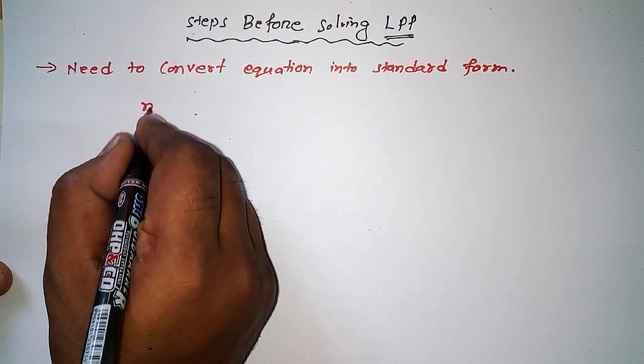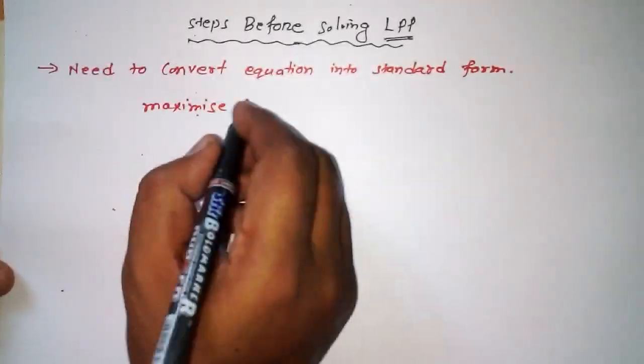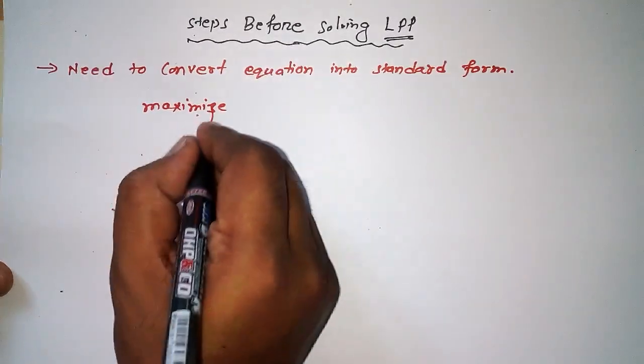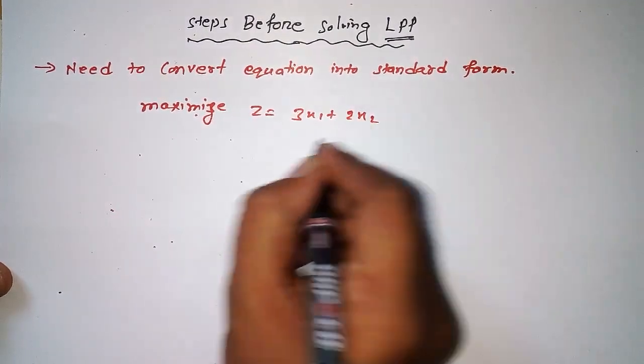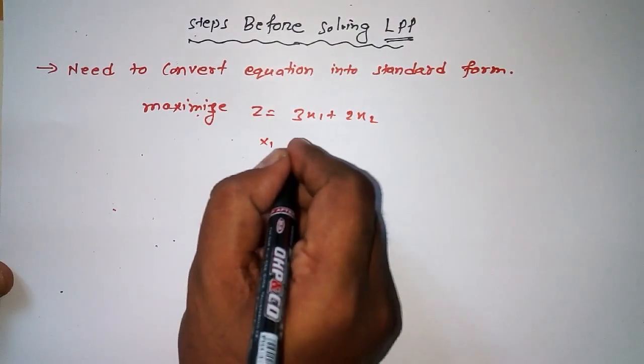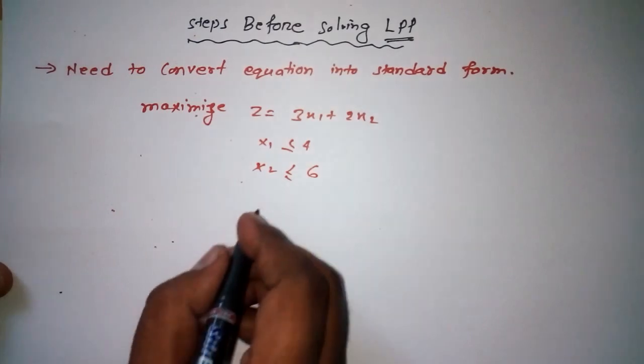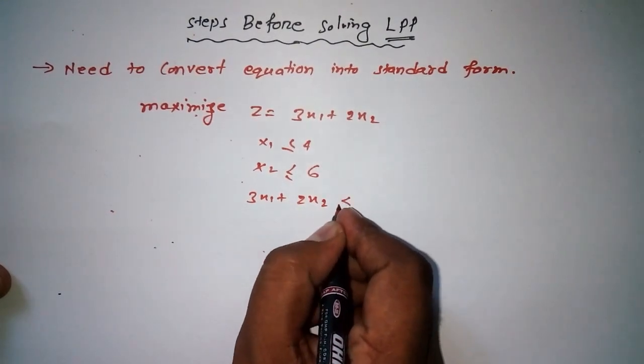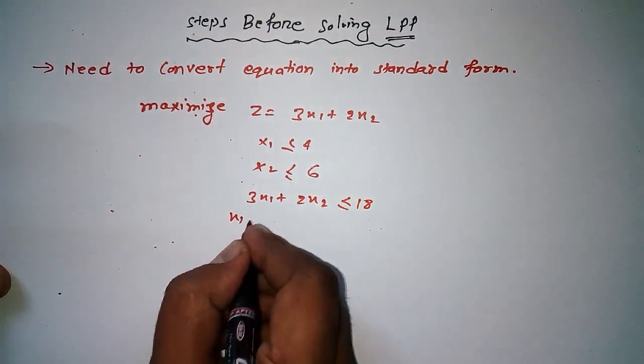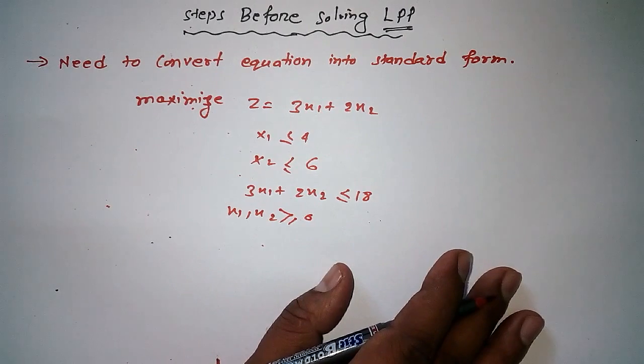Suppose that we have given a question: maximize Z equals 3X1 plus 2X2, and then X1 less than or equal to 4, X2 less than or equal to 6, and 3X1 plus 2X2 less than or equal to 18, X1 X2 greater than or equal to 0. Suppose that we are given a question like this.